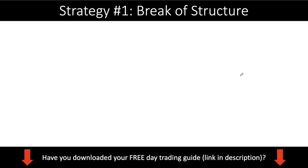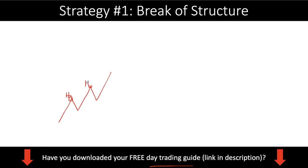Strategy number one is called break of structure. If you read our free day trading guide, we always talk about identifying market structure. Market structure is the first thing you do whenever you analyze a chart — regardless of which strategy you apply, whether day trading or swing trading. An uptrend is defined by a series of higher highs and higher lows: you have a higher high, a low, and a higher low. This is the definition of an uptrend.